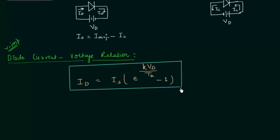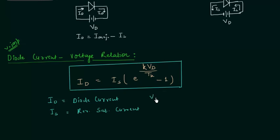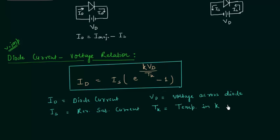We will use this relation in solving numerical problems, and you will have one question in your exam based on this formula. In this formula: Id is the diode current, Is is the reverse saturation current, Vd is the voltage across the diode, and Tk is the temperature in Kelvin. If you have temperature in degrees Celsius, then add 273 to convert it to Kelvin.